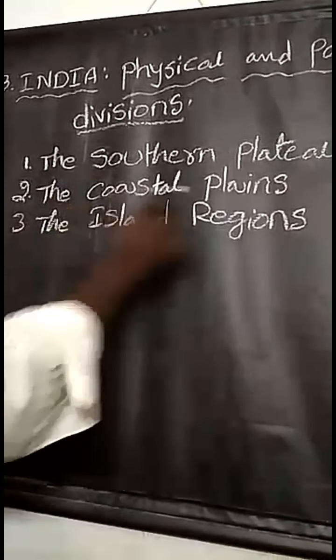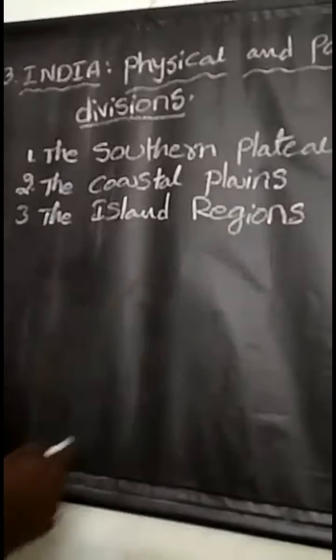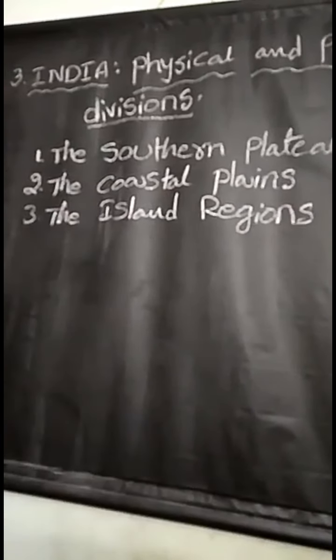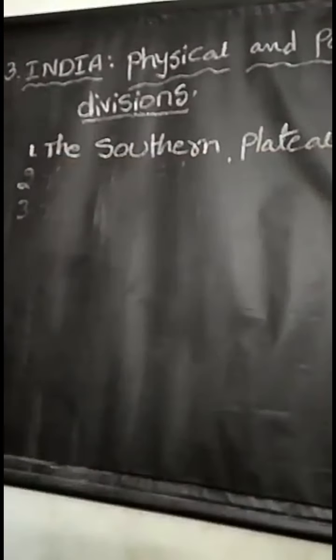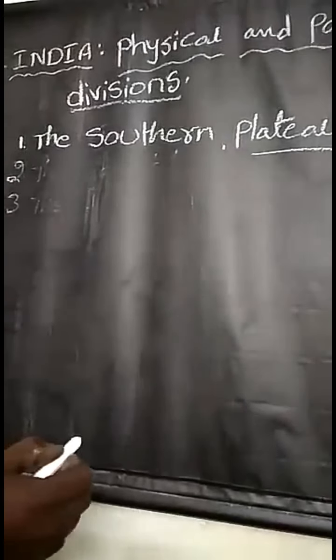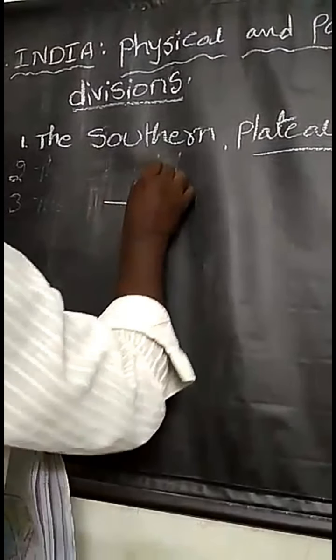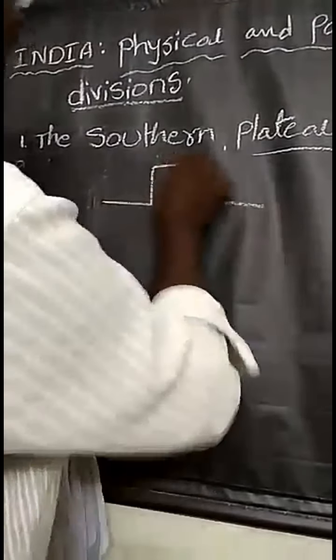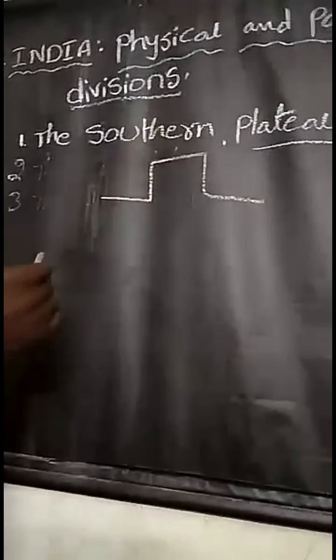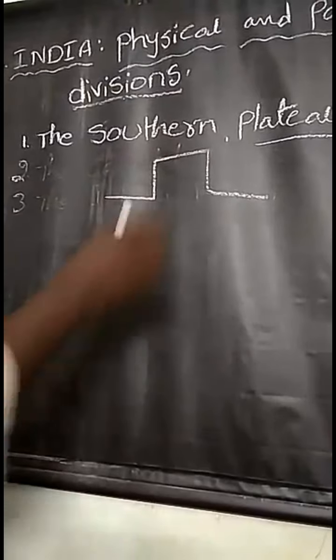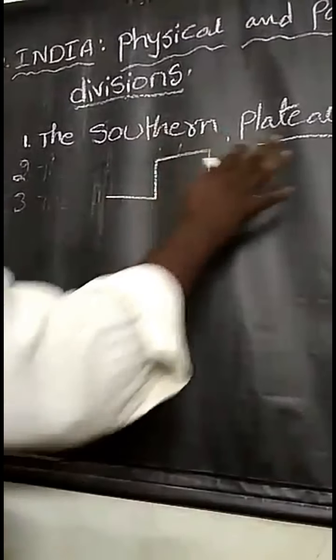The first one is the southern plateau. So what is the meaning of plateau? The land which is flat and higher than its surrounding area is called a plateau. This plateau covers a large part of our country.